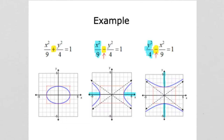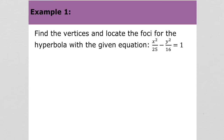Here are some examples. You can see the difference between the ellipse and the hyperbola: with the ellipse you have a plus in the middle, with a hyperbola it's always minus. Example 1 says: find the vertices and locate the foci for the hyperbola with this equation. Our first step is to identify the transverse axis.